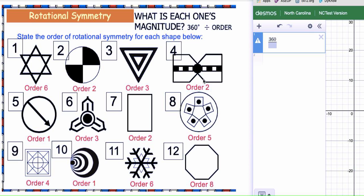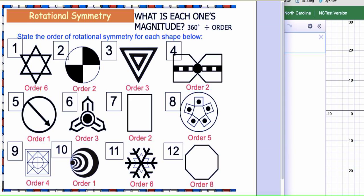Alright, this part of rotational symmetry is going to talk about order of magnitude. Order of magnitude is basically 360 degrees, so you're going to take your 360 degrees and divide that by your order of rotation.